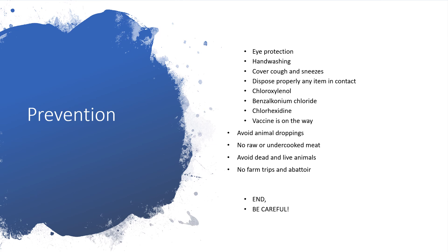For prevention, use high-level protection and wash your hands. Practice proper sneezing and coughing etiquette, and dispose properly of any items in contact with droplets. Disinfectants such as chloroxylenol and benzalkonium chloride can be used. A chlorhexidine-based vaccine is on the way but not yet available. If you must travel to China, avoid animal droppings, raw or undercooked meat, dead animals, live animals, and farm visits. Do not visit areas, particularly regions where this virus has been diagnosed or where people have been affected.